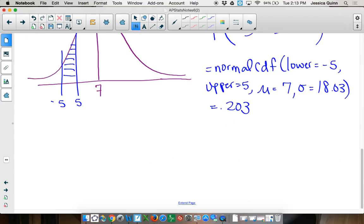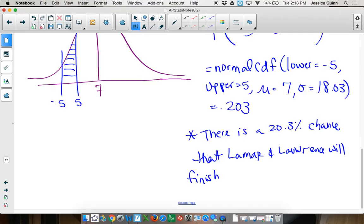So there is a 20.3% chance that Lamar and Lawrence will finish within 5 minutes of one another. Where did you get the bounds, the lower and upper bounds? From here. So again, if I take Lamar minus Lawrence, if Lamar is finishing, if he's taking longer, but they finish within...